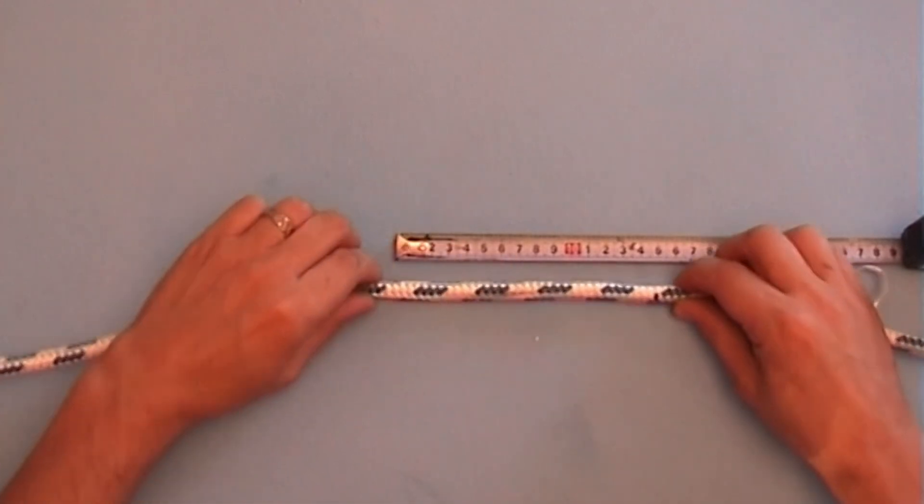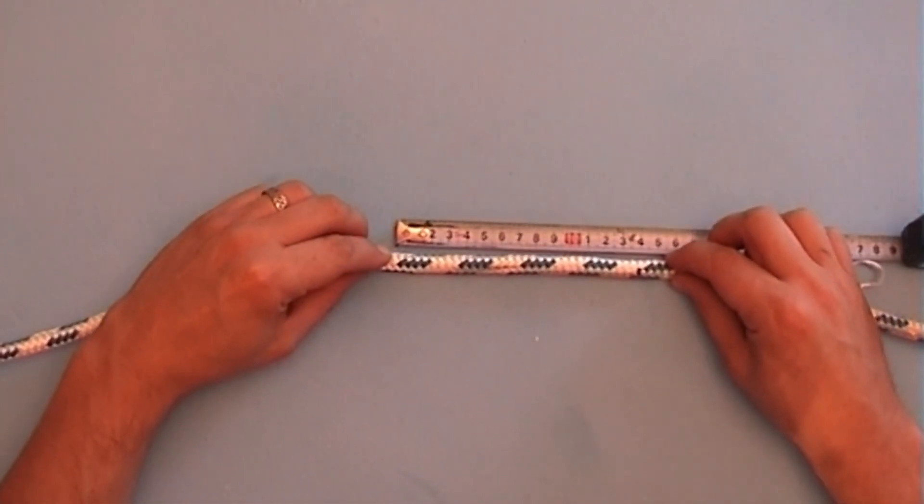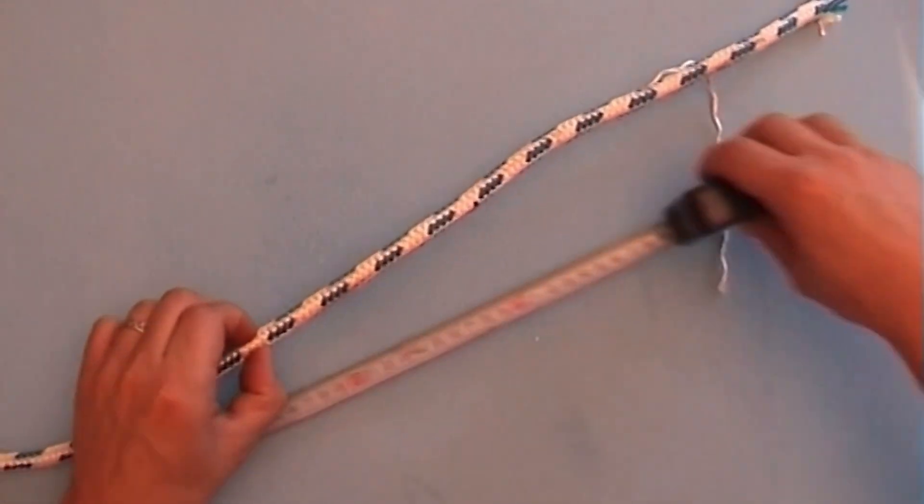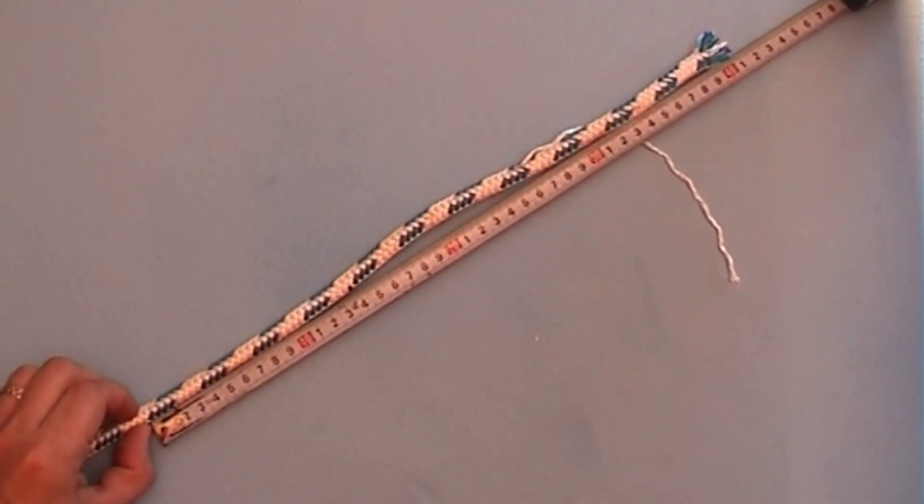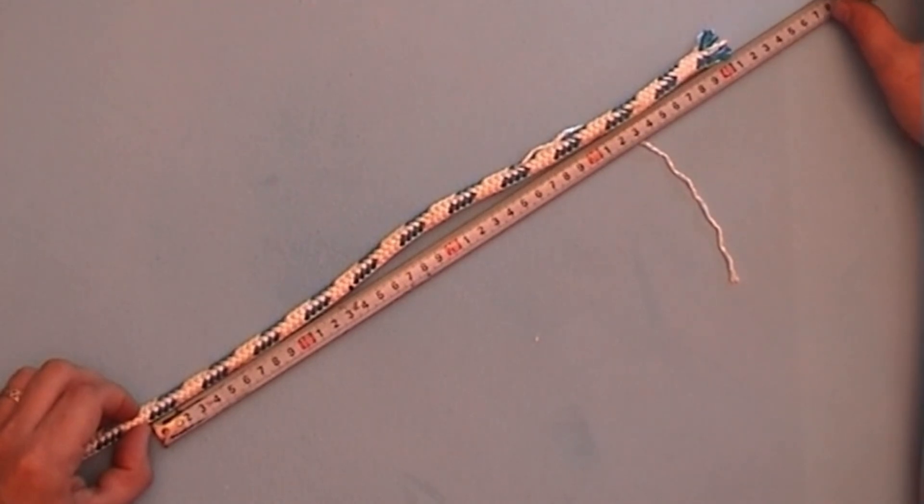From the mark again, measure 14 times the rope diameter. I've now measured 41 cm or 16 inches in total.